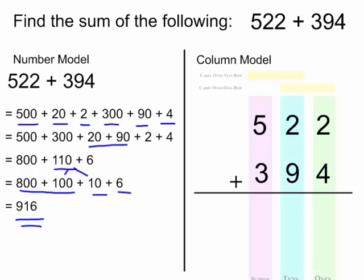If we come over to the column model, when I add up the ones, I get 6 ones together, so there's no carryover. It did not create a group of 10. When I add up the tens column, I get 11 groups of 10, so I've created another group of 100.